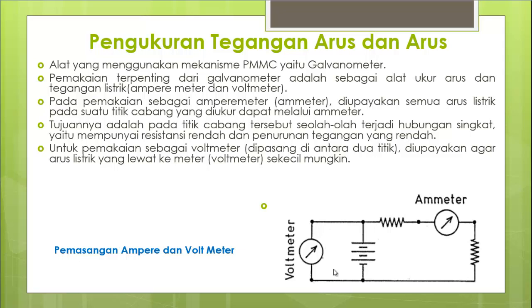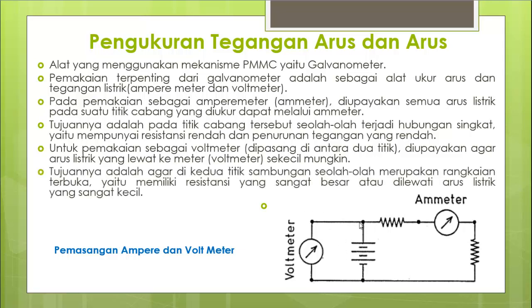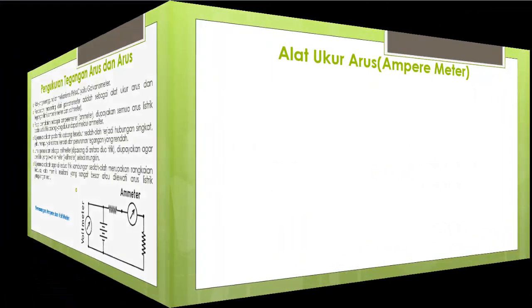Untuk pemakaian voltmeter, dipasang di antara dua titik dari nilai tegangan yang akan dicari. Diupayakan agar arus listrik yang lewat ke voltmeter sekecil mungkin, sehingga di kedua titik sambungan seolah-olah merupakan rangkaian terbuka, yaitu memiliki resistansi yang sangat besar. Jadi, ammeter dihubungkan secara seri untuk mengukur arus, sedangkan voltmeter ditempatkan di ujung sumber tegangan untuk mengukur nilai tegangan. Ini menjadi dasar pemasangan dari ammeter dan voltmeter.